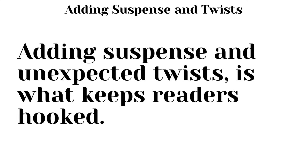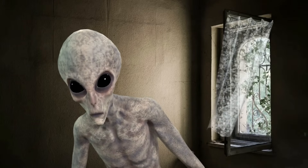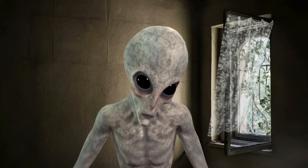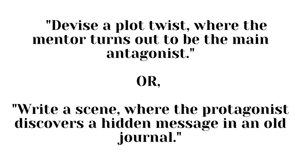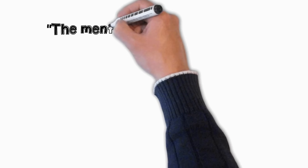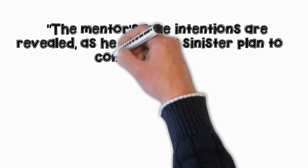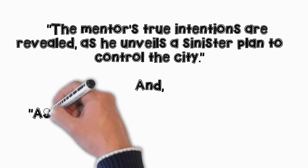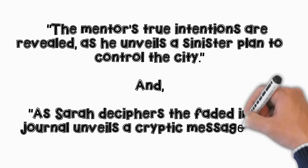Adding suspense and unexpected twists is what keeps readers hooked. Use ChatGPT to brainstorm plot twists and surprises for your story. For instance, use prompts like: 'Devise a plot twist where the mentor turns out to be the main antagonist,' or 'Write a scene where the protagonist discovers a hidden message in an old journal.' ChatGPT may reply: 'The mentor's true intentions are revealed as he unveils a sinister plan to control the city,' or 'As Sarah deciphers the faded ink, the journal unveils a cryptic message that hints at a long-lost treasure.'